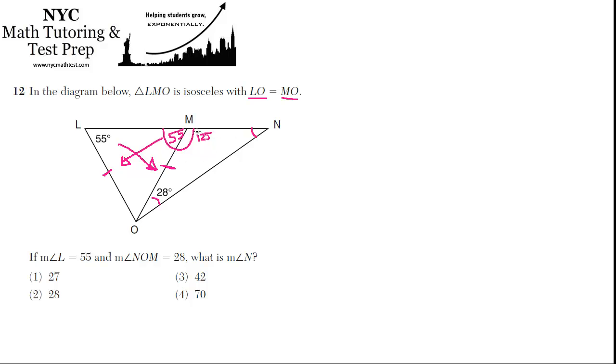And now we can just work with triangle MNO, and its internal angles must add up to 180. So angle N must be 180 minus 125 minus 28, which is 27. Best choice is 1.